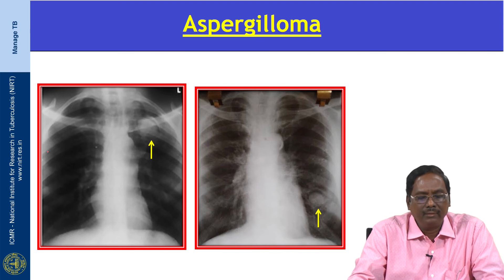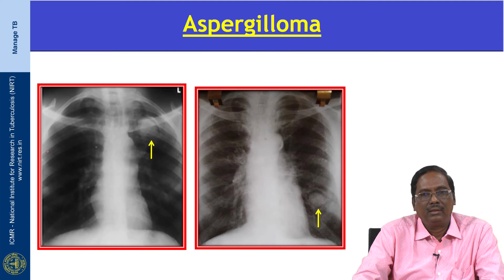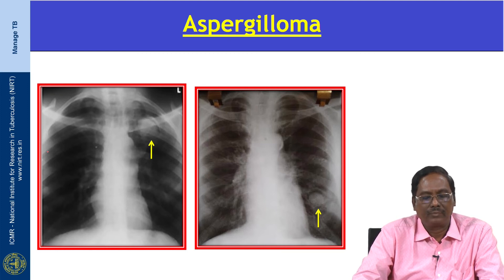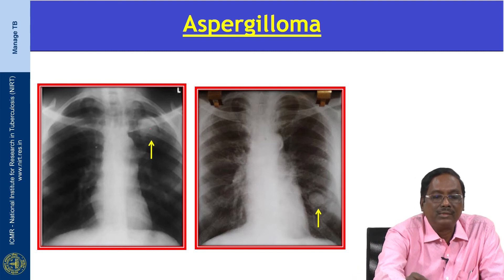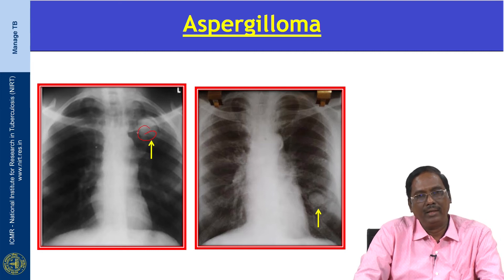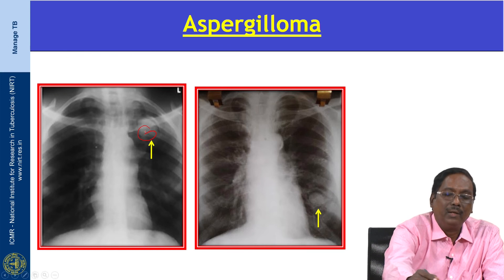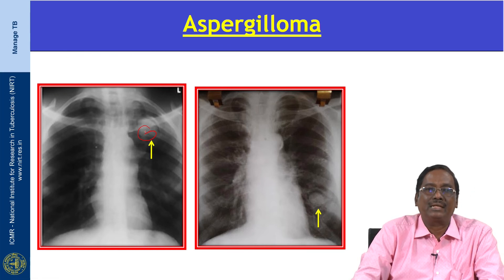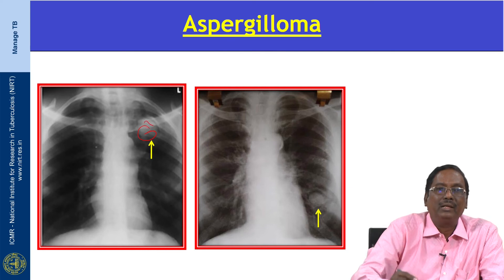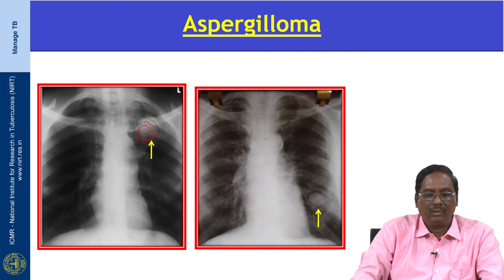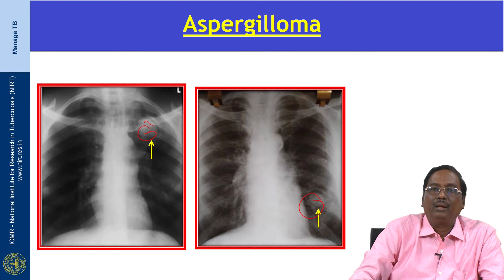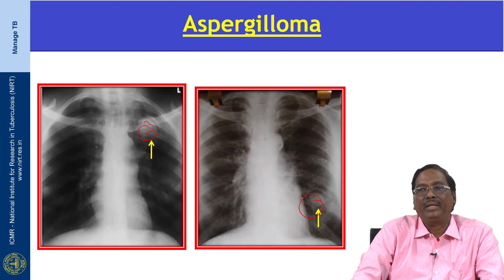Aspergilloma is seen in 11 percent of patients with chronic cavitary disease. It exists for many years without symptoms, but hemoptysis is the most common symptom, seen in 80 to 90 percent of patients. Aspergilloma consists of a mass of fungal hyphae admixed with mucus and cellular debris. Radiologically, it presents as a mass in a pre-existing cavity with an air crescent sign surrounding the mass — we call this the monod sign. Here is aspergilloma present in a pre-existing cavity.